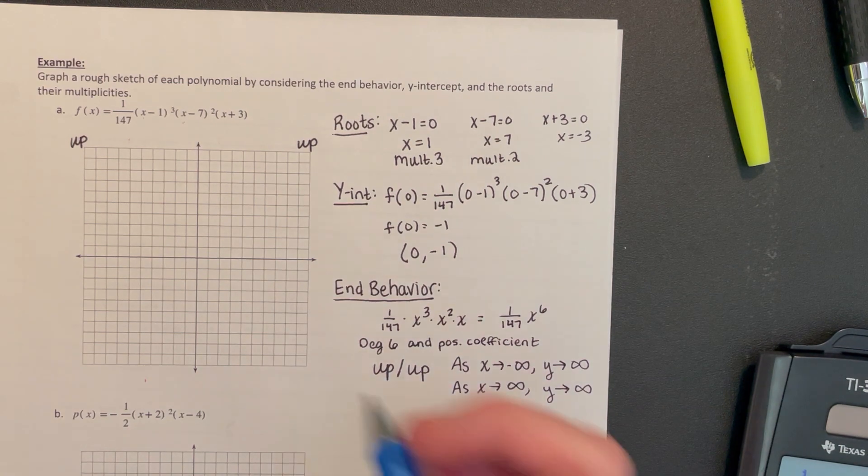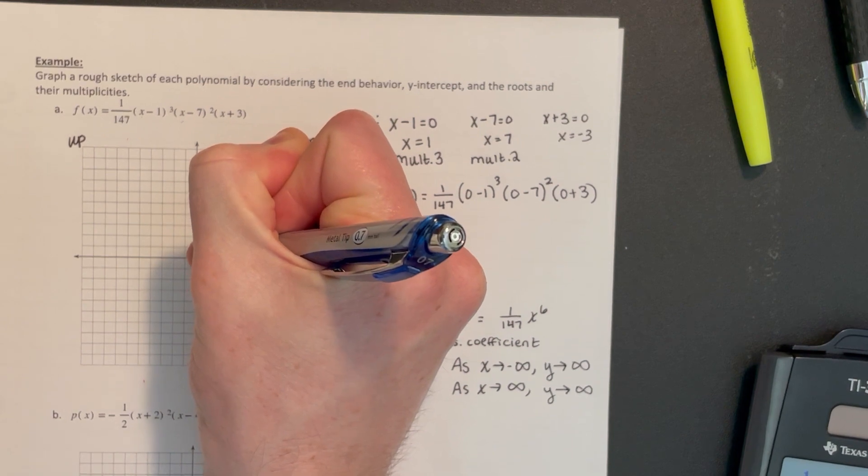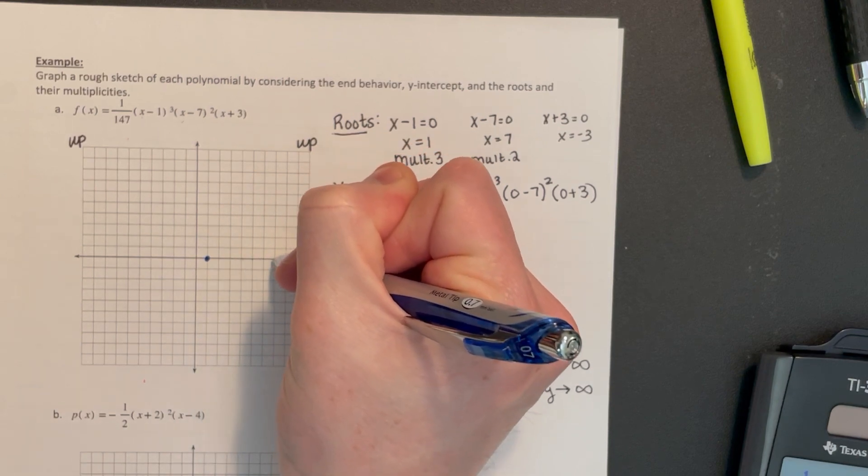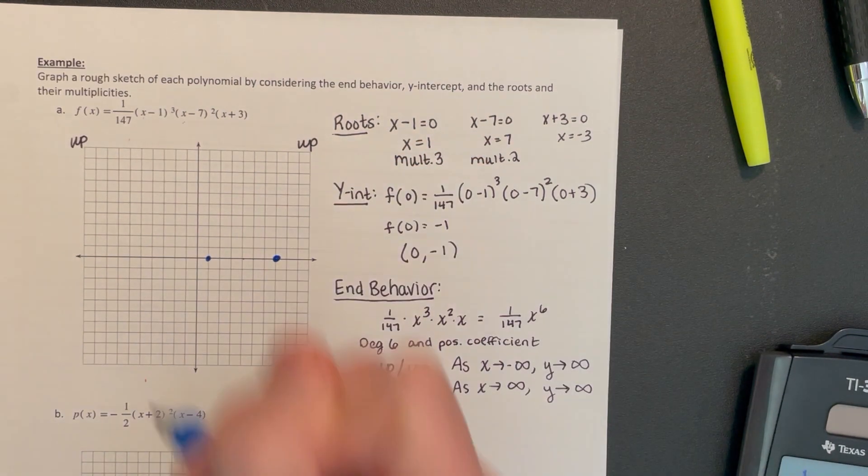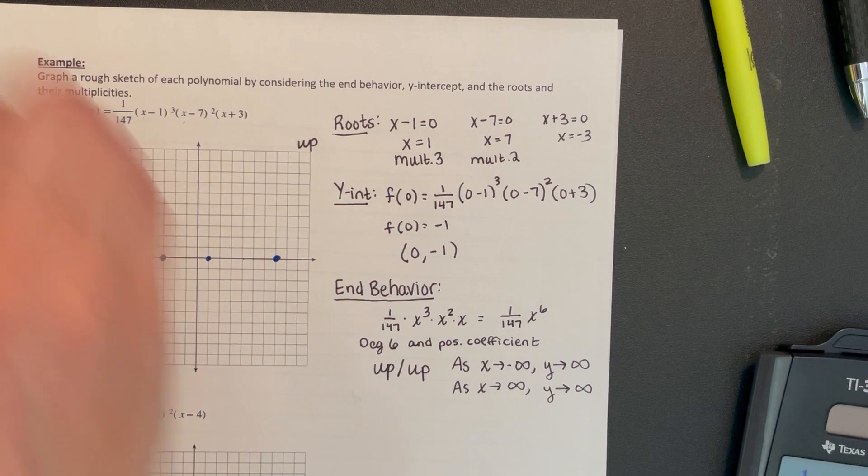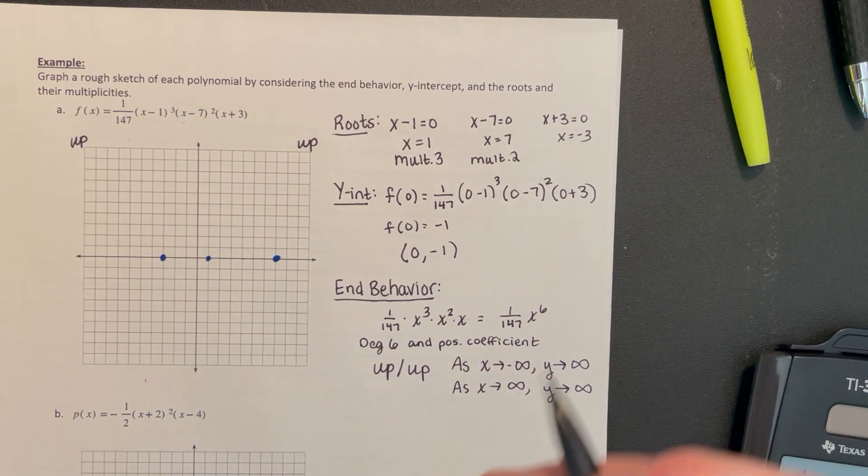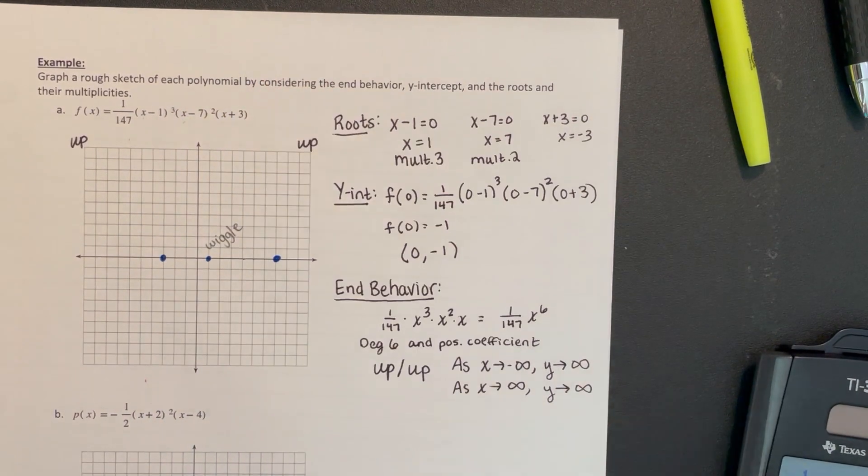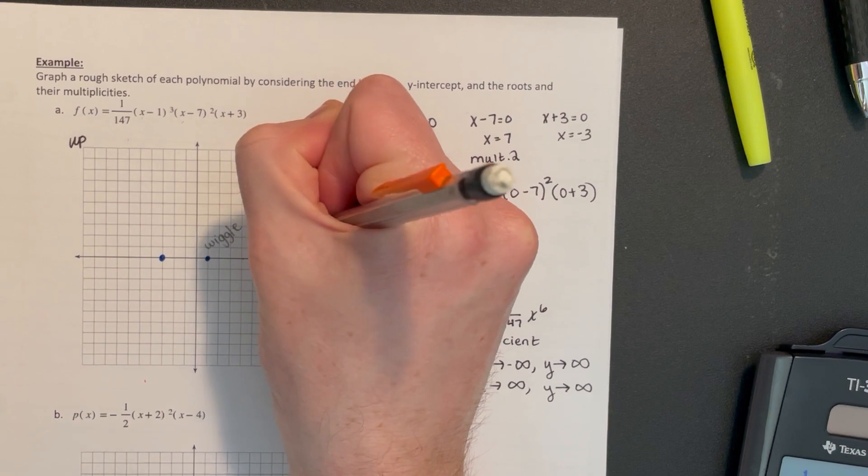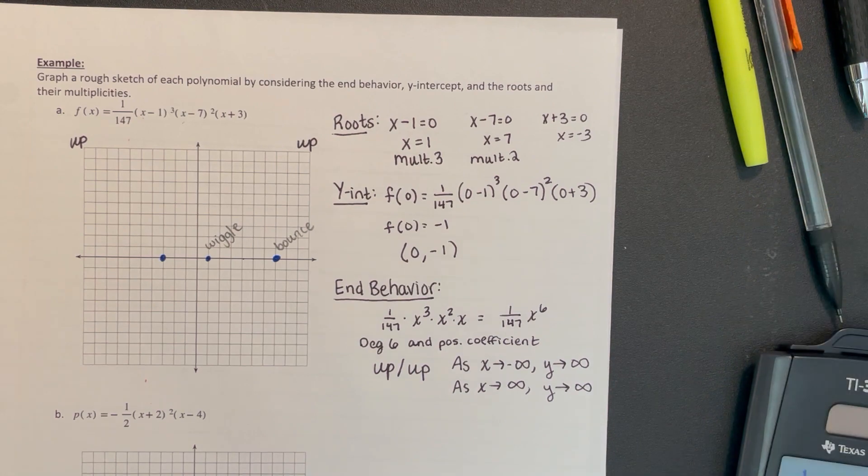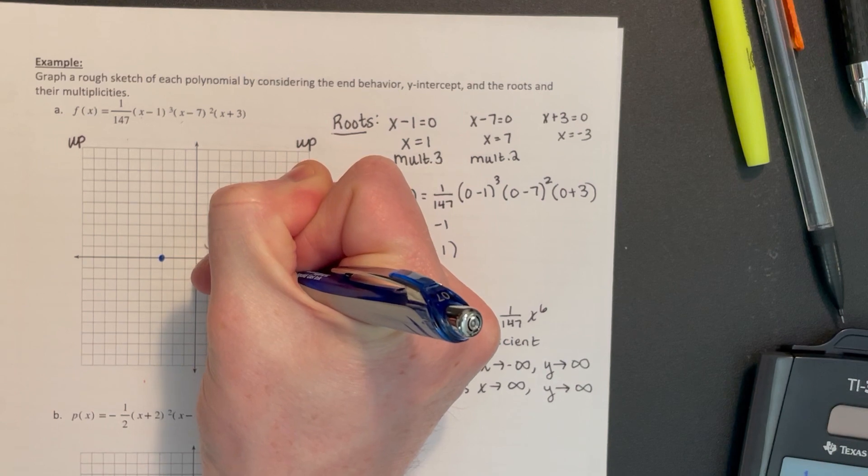I like to write up, up in the corner so I know what direction I should be going. We can also start plotting some of those points. We know that x equals 1 was one of them, x equals 7, and x equals -3. If we want to write a little reminder, multiplicity of 3 is going to make it wiggle. Multiplicity of 2 is going to make it bounce. Multiplicity 1 just goes straight through. We want to take this through the y-intercept at (0, -1).